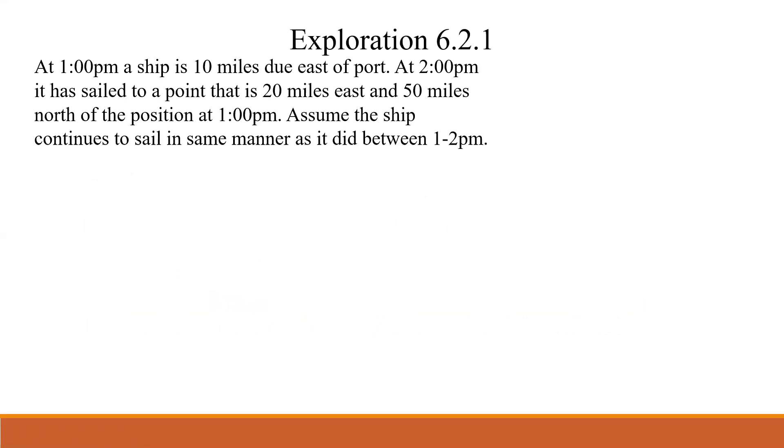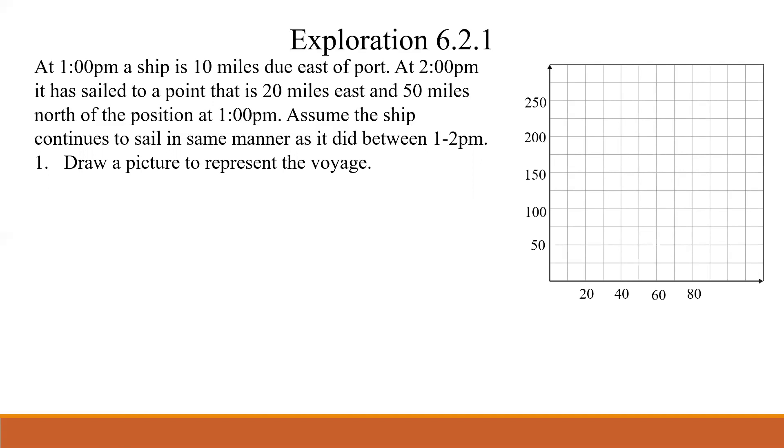So 6.2.1 is super short and starts off kind of gives you a little situation about a ship. At 1 p.m. it's 10 miles due east of port and at 2 p.m. it's now at a point 20 miles east from port and then 50 miles north. It's going to keep on doing that same kind of behavior. So the first question, we're going to draw a picture. I'm going to do like an XY grid type thing and we know our port is going to be there at the origin. Notice how I label each axis. My East axis or X axis, every line is 10 miles. And then on the Y axis, the north axis, I've made every line 25 just to make it easier so I can fit it all on a decent size grid here.